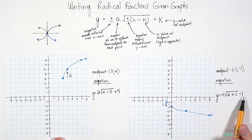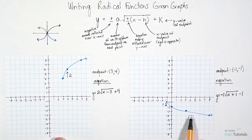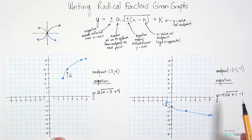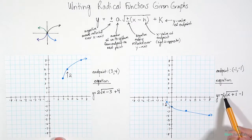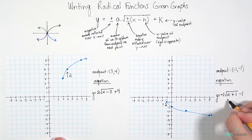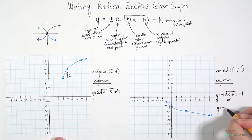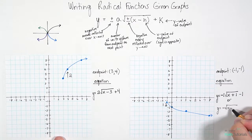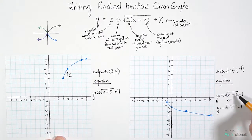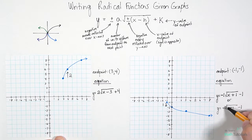It's important to note you don't have to put that 1 there — we could rewrite this as y equals just negative, then the square root of (x + 1) minus 1. Both say the same thing; the coefficient of 1 is understood.